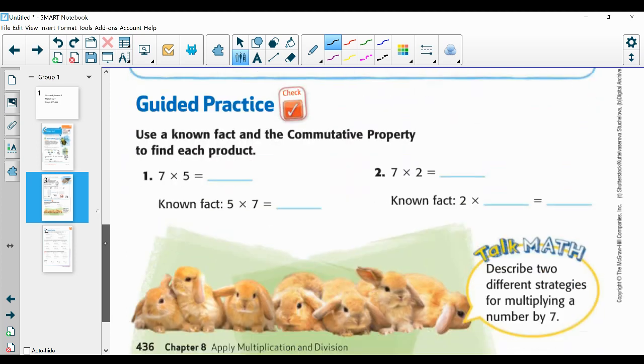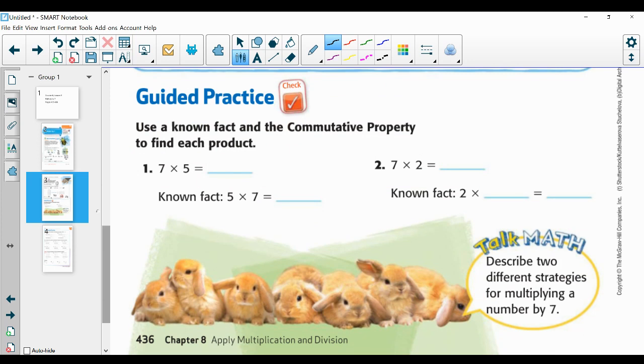Okay. All right. Guided practice. Use a known fact and the commutative property to find each product. So seven times five equals. The known fact is five times seven. So fill in the known fact, pause your video, and then come back for your answer. Okay. The known fact, five times seven is thirty-five. Now put the same number in for seven times five. Thirty-five.